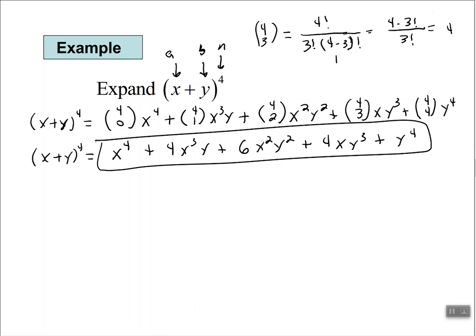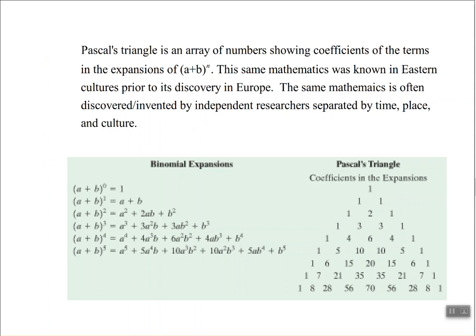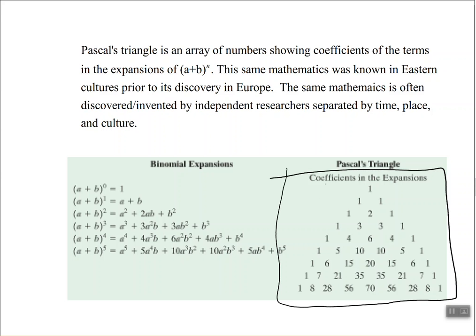Another method of finding those multiplier coefficients — like 1, 4, 6, 4, and 1 — is to use what we call Pascal's triangle. Pascal's triangle is an array of numbers showing coefficients of the terms in expansions of (a + b) to the nth power. Looking at the triangle, at the very top we start with 1.